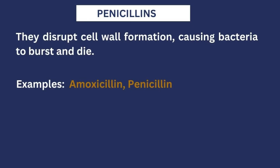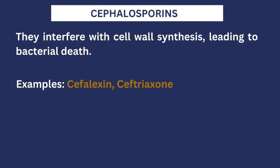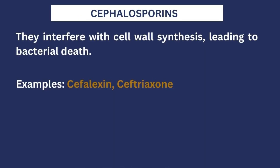Common examples of penicillins are amoxicillin and regular penicillin medication. The next class is the cephalosporins. Cephalosporins work very similarly to penicillin — they also interfere with the bacteria's cell wall, making the bacteria very weak and unable to survive. Very common examples of cephalosporins are cephalexin and ceftriaxone.